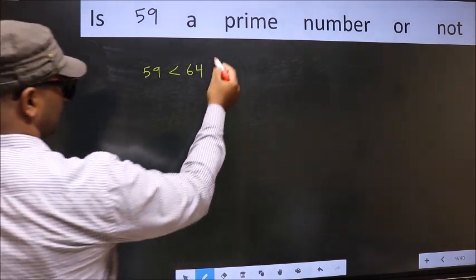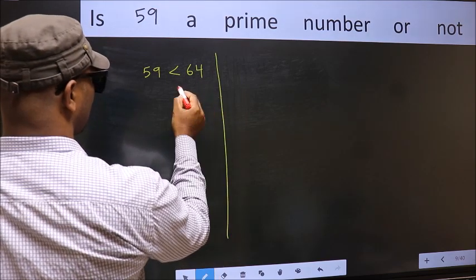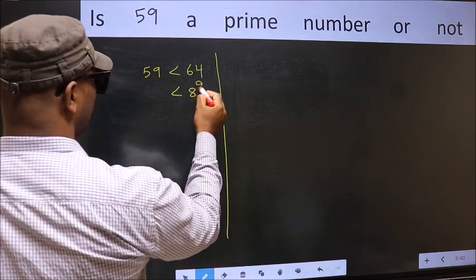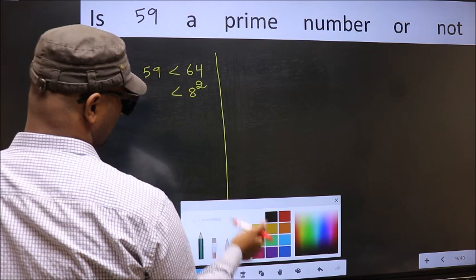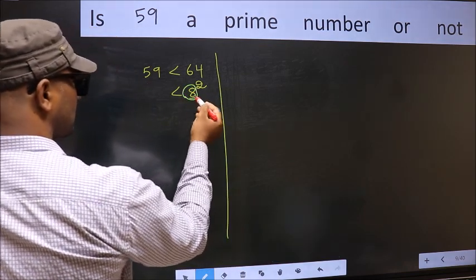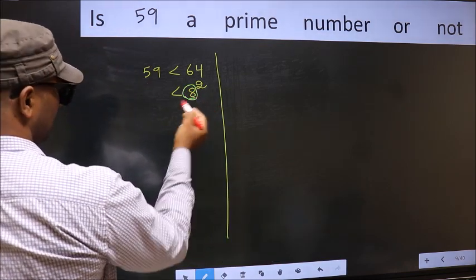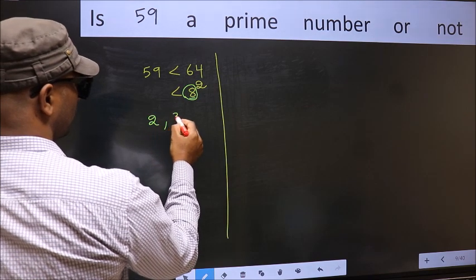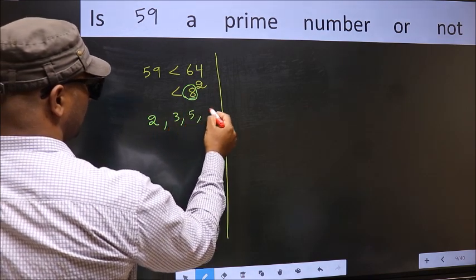Next, 64 is nothing but 8 square. Now, you should write all the prime numbers less than this number. They are 2, 3, 5 and 7.